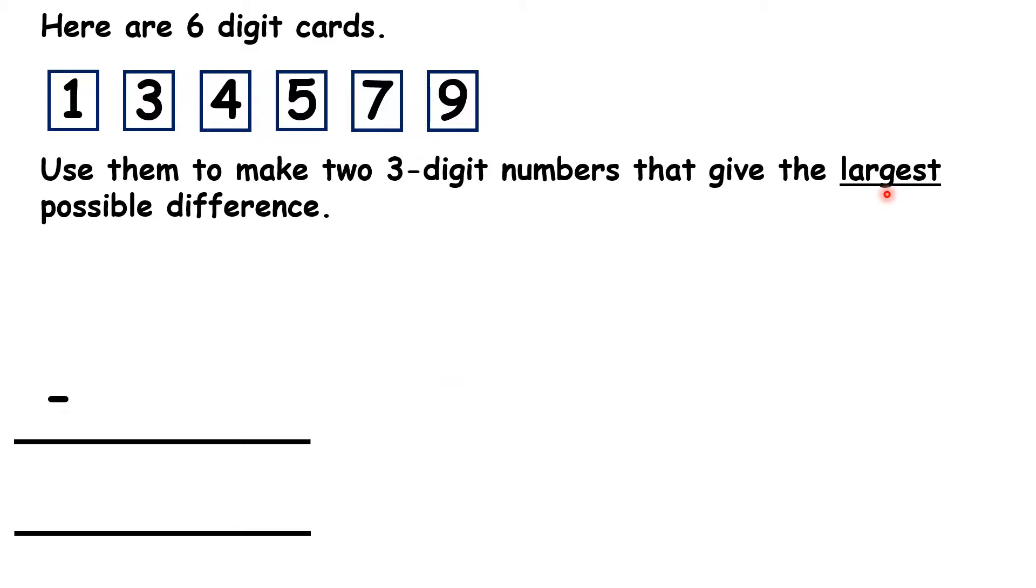Well, because we want the largest possible difference, we want the digits with the largest difference in the largest place value. So let's move the nine and then one to our hundreds column.